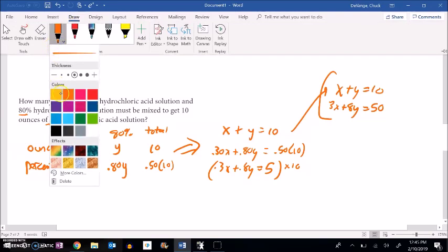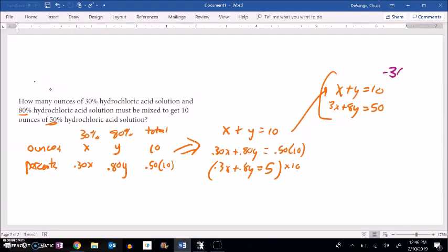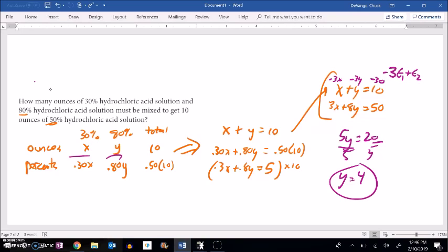I think what I'll do is go negative 3 times the first equation and add it to the second equation, because that will eliminate my x's. So when I multiply this by negative 3, it's negative 3x, negative 3y, negative 30. Let me add them together. That's 0, which I wanted to happen. Negative 3 plus 8 is 5. 5y. Negative 30 plus 50 is 20. Divide by 5. Y is 4. So if y is 4, x must be 6. So there would be 6 ounces of the 30% solution and 4 ounces of the 80% solution.